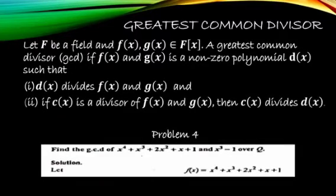So now we move on to what is greatest common divisor, that is GCD. Let F be a field and F of X and G of X belongs to capital F of X. A greatest common divisor GCD if F of X and G of X is a non-zero polynomial D of X such that two conditions should satisfy. D of X divides F of X and G of X, and if C of X is a divisor of F of X and G of X, then C of X divides D of X.